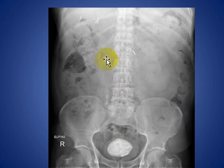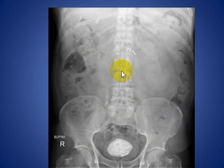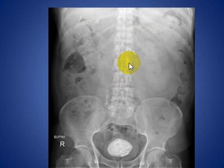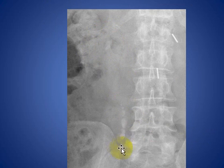Here you see two renal stones, and multiple ureteric stones are seen on the right mid-lower ureter, with a large stone in the urinary bladder. You also see surgical clips in the right upper abdomen and the midline of the abdomen. This is a magnified view showing the renal stones and multiple ureteric stones.